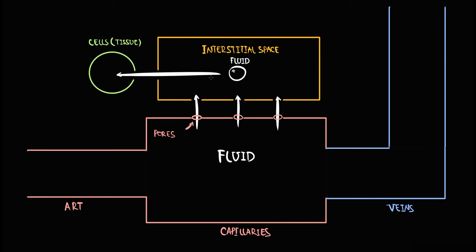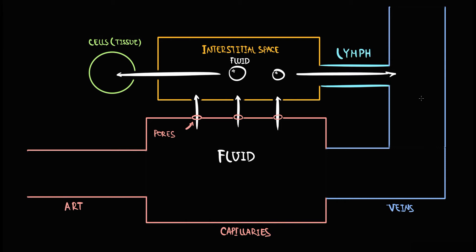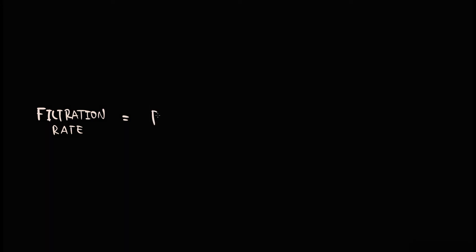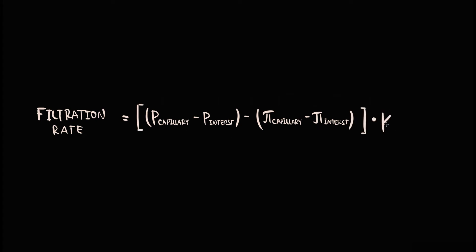Some portion of fluid after this usually remains in the interstitium, and then the lymphatic system drains the excess fluid from the interstitial space into the venous system. The amount of fluid that crosses capillaries and enters the interstitium depends on filtration rate, which is described by the Starling equation. Filtration rate equals the hydrostatic pressure difference between capillaries and interstitium, minus the oncotic pressure difference between capillary and interstitium.